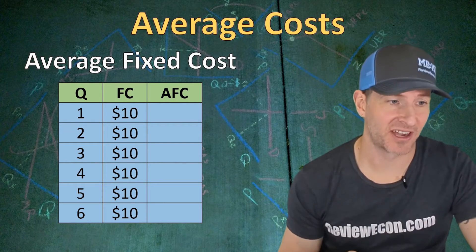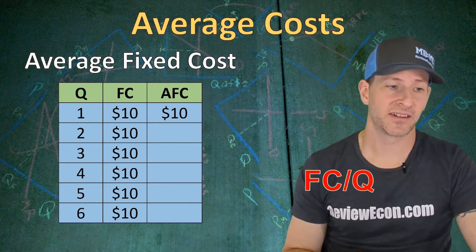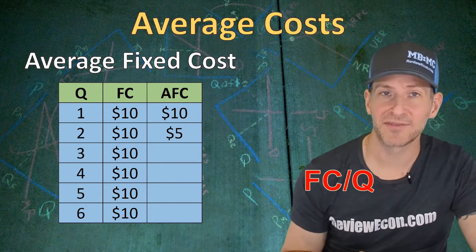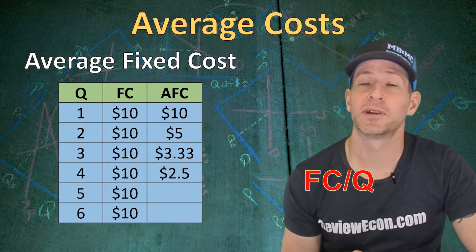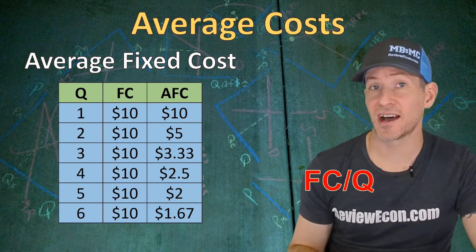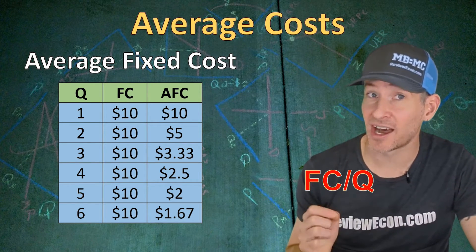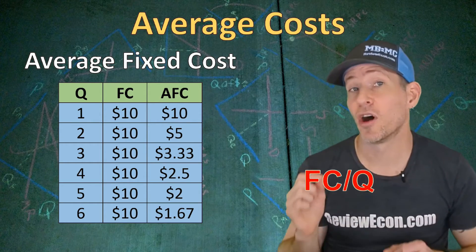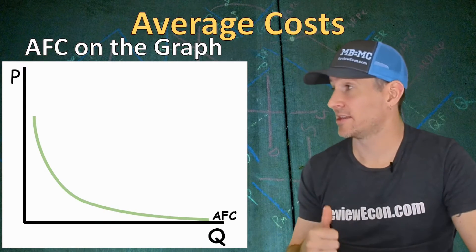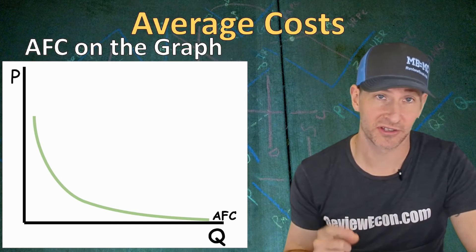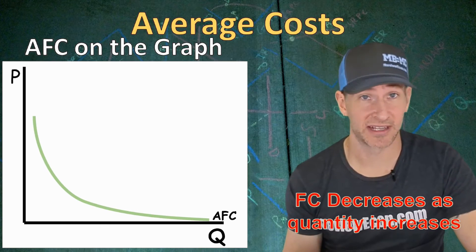Next we have average fixed costs. We take the fixed costs and divide by the quantity. At one unit, the average fixed cost is $10. At two units, it's $5. At three units, it's $3.33. At four units, $2.50. The average fixed cost consistently decreases as more units are produced, because we're taking fixed costs that don't change with output and distributing them over a larger number of units. When you graph average fixed costs, as more units are produced, the average fixed cost gets closer and closer to the x-axis but never intersects it.